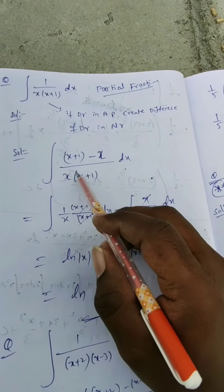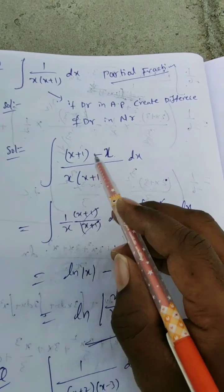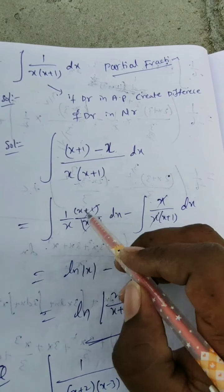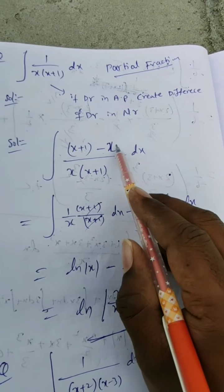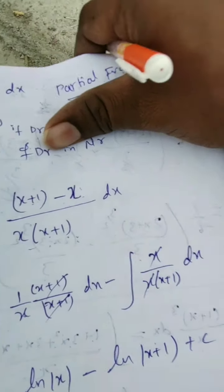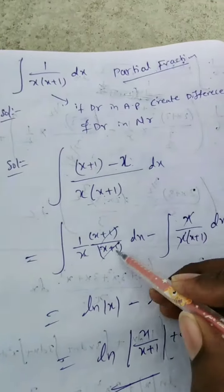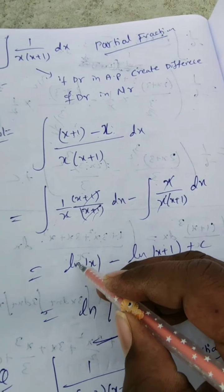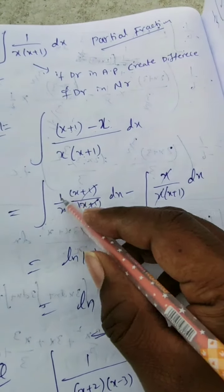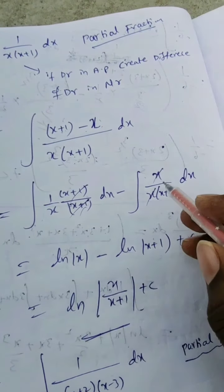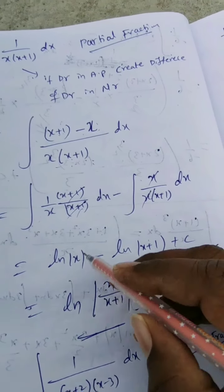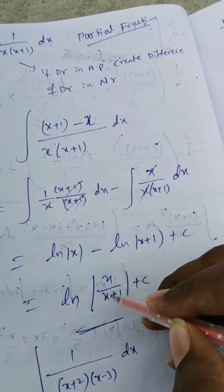Now separate the integration into two parts: integration of x plus 1 upon x plus 1 into x dx, minus integration of x upon x into x plus 1 dx. The x plus 1 cancels in the first part, and x cancels in the second, giving integration of 1 by x dx minus integration of 1 by x plus 1 dx. That is ln|x| minus ln|x+1|.